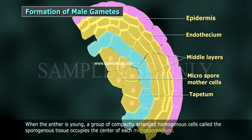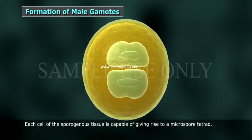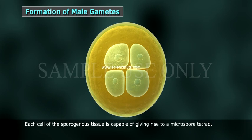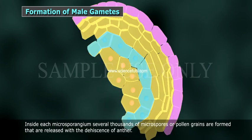When the anther is young, a group of compactly arranged homogenous cells called the sporogenous tissue occupies the center of each microsporangium. Each cell of the sporogenous tissue is capable of giving rise to a microspore tetrad. The process of formation of microspores from a pollen mother cell through meiosis is called microsporogenesis.